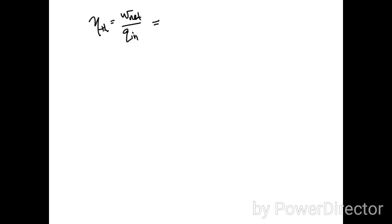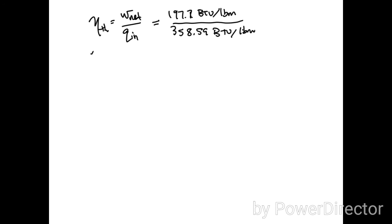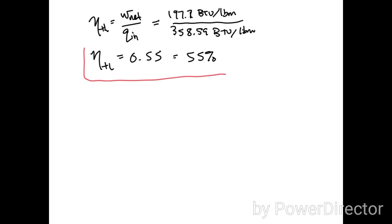Now we calculate the thermal efficiency: that's net work divided by total heat input. Substituting in the values — 197.71 divided by 358.59 BTU per pound mass — the thermal efficiency works out to 0.55, or 55 percent for the whole cycle.